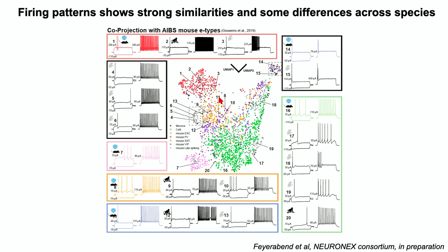We have a project in our NeuroNext consortium where we take electrophysiological properties, put them in a UMAP space, and build clusters of neurons. We compare neurons from mice from the Allen Institute database, from our macaque monkey database, and from marmosets. What we see is that this firing phenotype seems to be very similar across the three species — those response patterns are not only diverse, they also seem to be preserved across species.